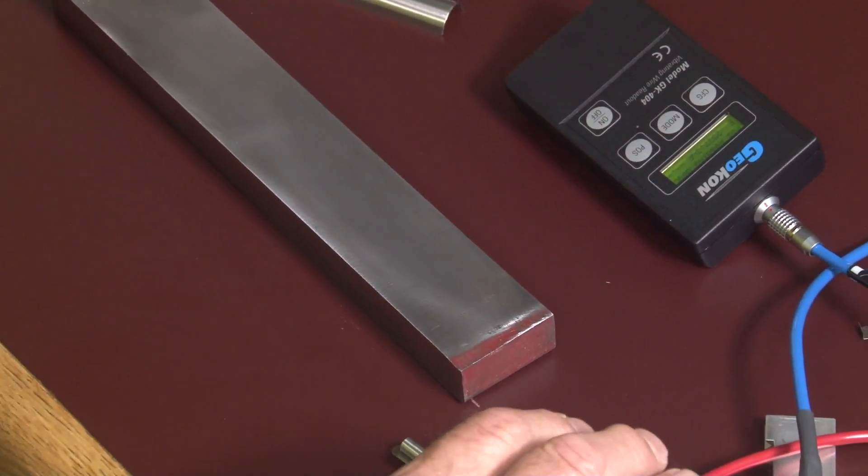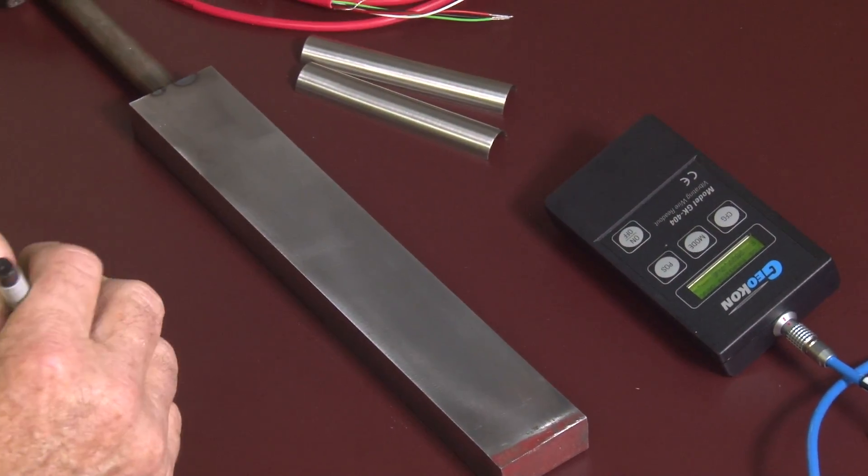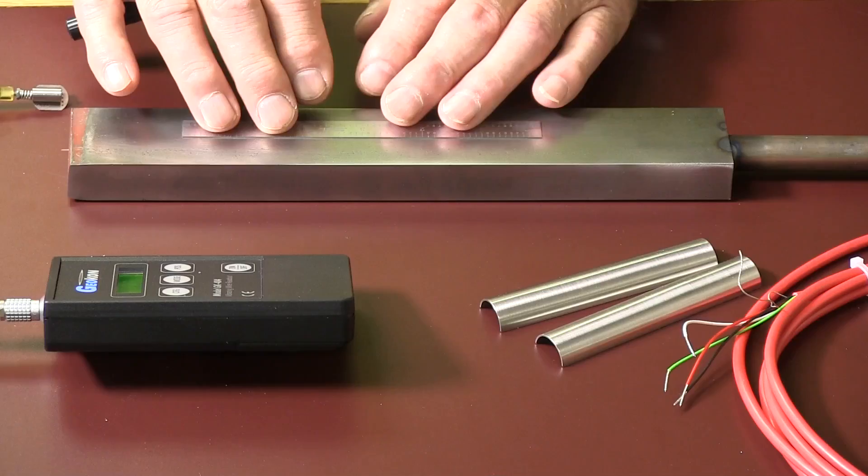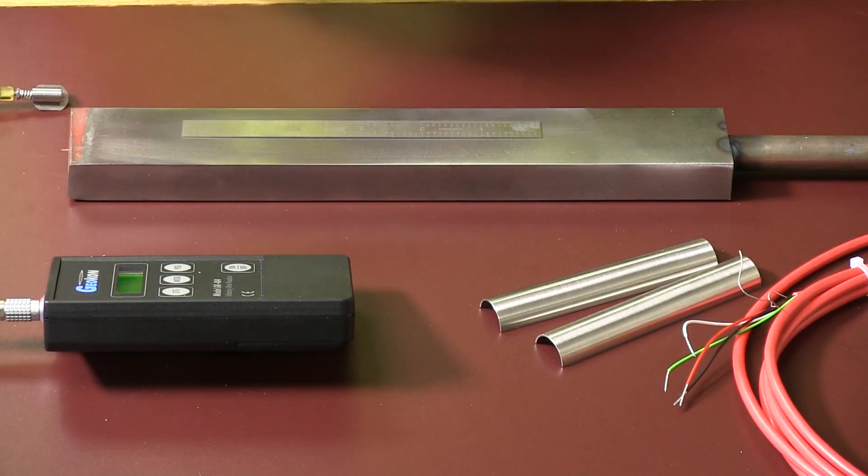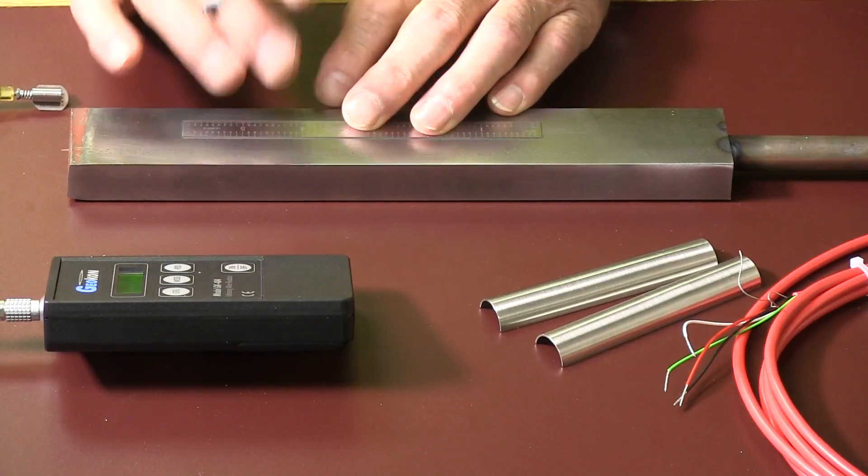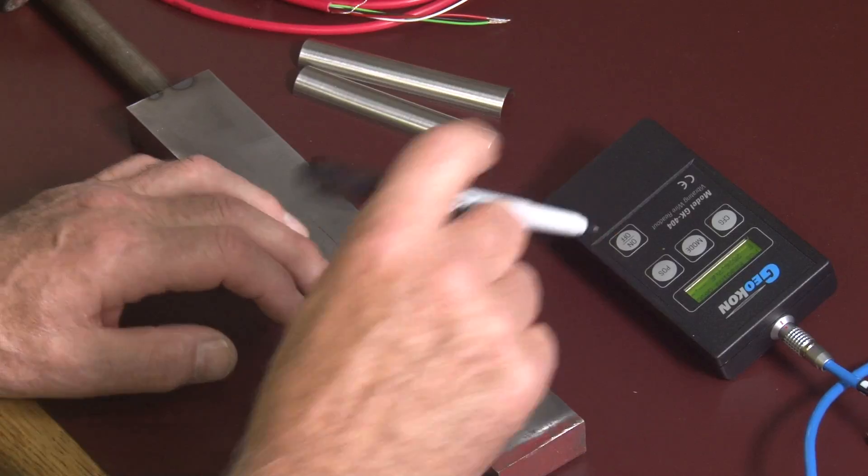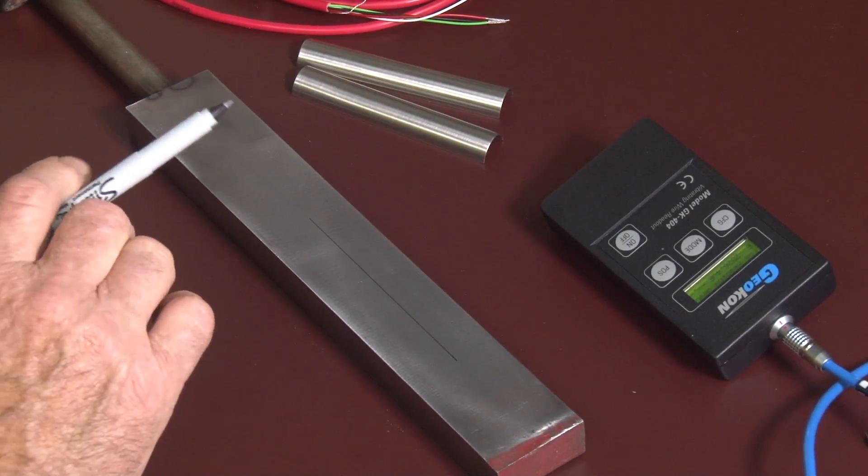My next task is to mark the structure along the alignment that we're going to set the gauge at, just so I'll keep it on a straight line on the axis. I use this Sharpie and a straight edge. There's my position line.